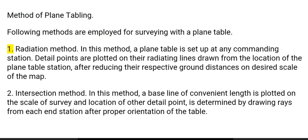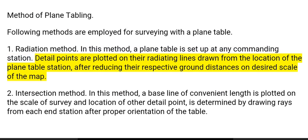1. Radiation method: In this method, a plane table is set up at any commanding station. Detail points are plotted on their radiating lines drawn from the location of the plane table station after reducing their respective ground distances on the desired scale of the map.